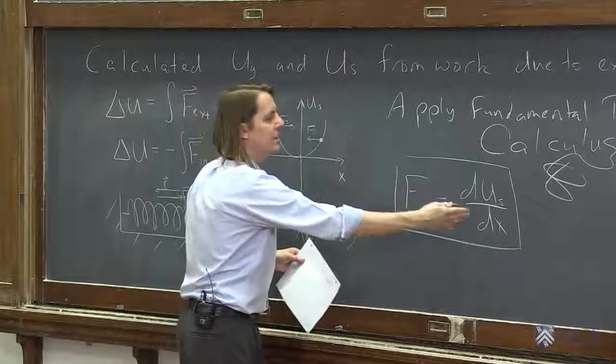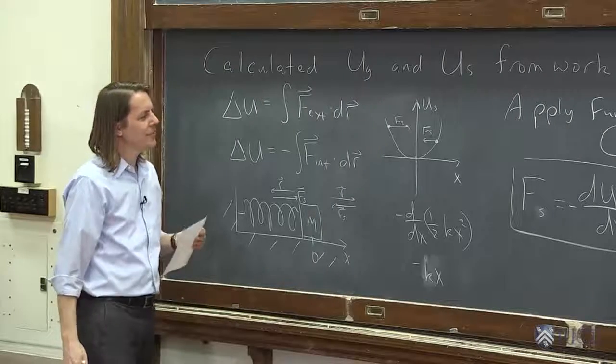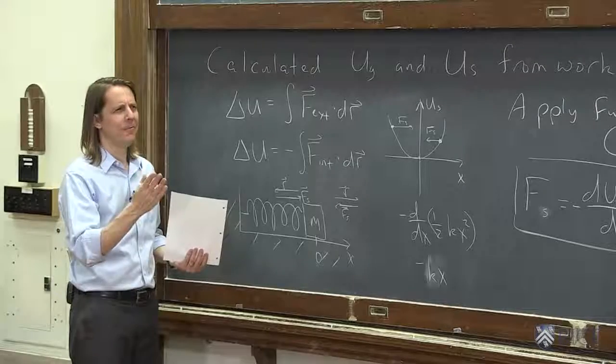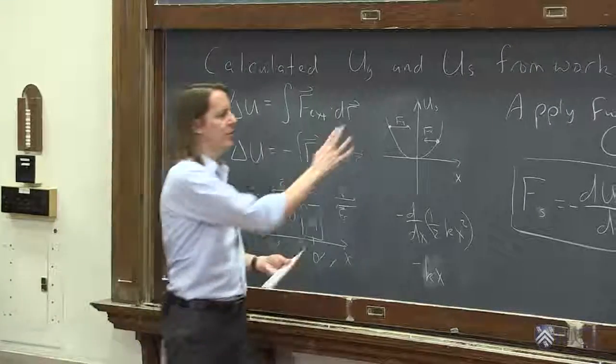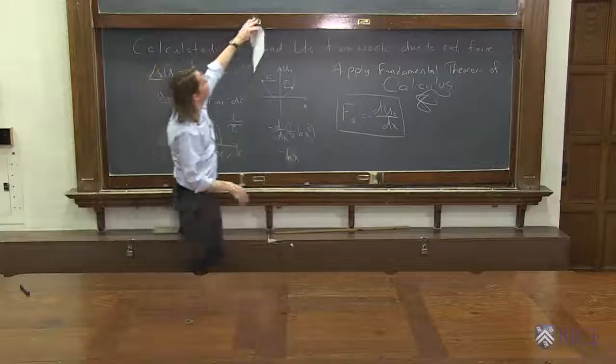But this is the general way to get a force from a conserved potential. And in physics then, if we're going to think about a mass on a spring, we don't actually think about plotting the force. That would be weird. We always plot this. We always think in terms of energies and plot energy.